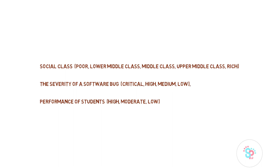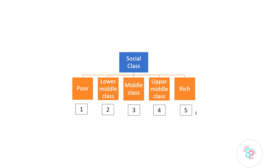We can also assign numbers to these categories as we did for nominal variables. Under social class, I have assigned one for poor, two for lower middle class, three for middle class, four for upper middle class, and five for rich. When it comes to ordinal, the number does hold meaning — two is assigned to lower middle class and one to poor, and the lower middle class is also better than poor. Similarly, five is greater than four and rich is better than upper middle class. But one thing remains: we don't know how much better it is. Five is greater than four and rich is better than upper middle class, but we don't know how much better.